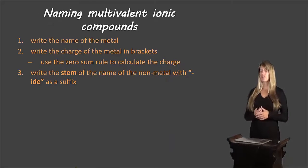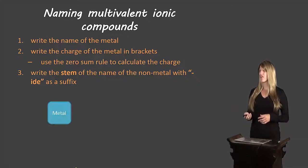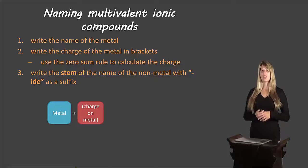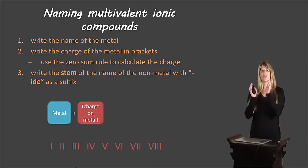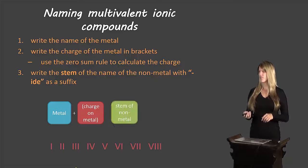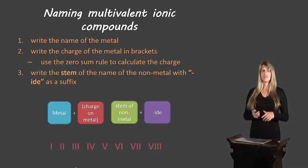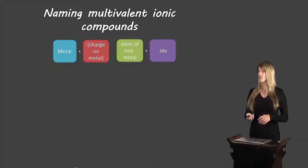Here are the rules for naming multivalent compounds. You start by writing the name of the metal, then in brackets you write the charge on the metal using Roman numerals — up to 8 for this course. Then you write the stem of the non-metal and add the ending -ide. So just like with other compounds, we add the suffix -ide to indicate we're dealing with a compound. Let's take a look at an example: Fe₂O₃.